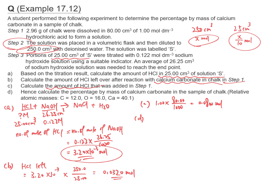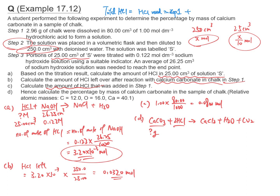Question D: calculate the percentage by mass of calcium carbonate in the sample of chalk. We go back to step 1 and write down the equation. Total HCl equals HCl used in step 1 plus HCl left.